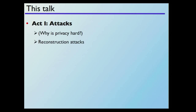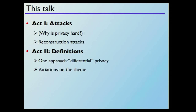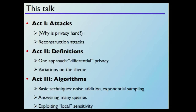Here's an outline. The first act will talk about attacks — I'll get into the math of reconstruction attacks in particular. The purpose of this section is to explain why the problem is hard. Act two covers definitions — I'll go in depth about one particular approach called differential privacy, something I was involved in developing, including variations and its strengths and limitations. The third part covers algorithms for differentially private mechanisms — basic techniques like noise addition and exponential sampling, plus more advanced material if time allows.